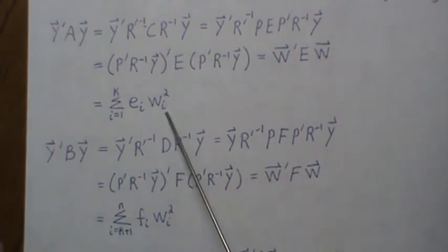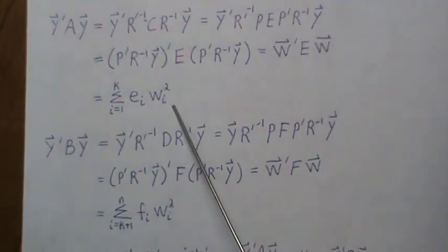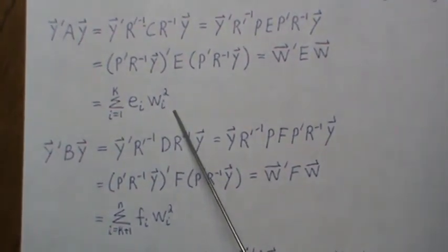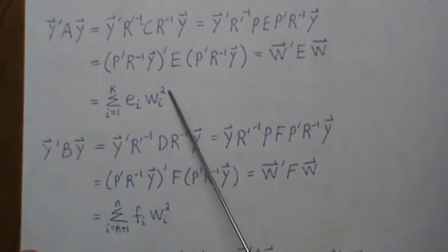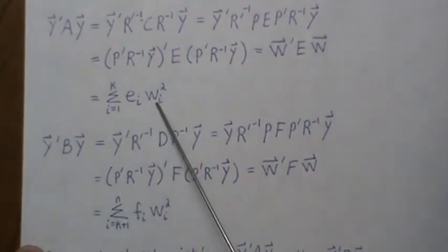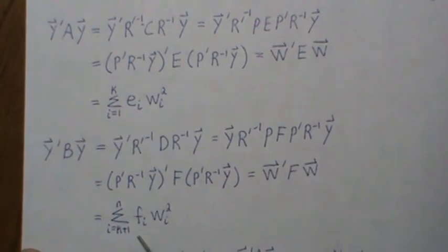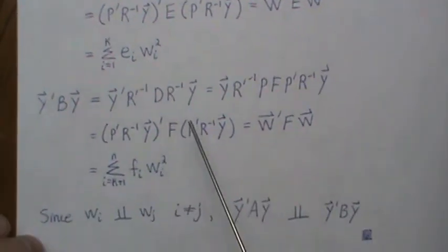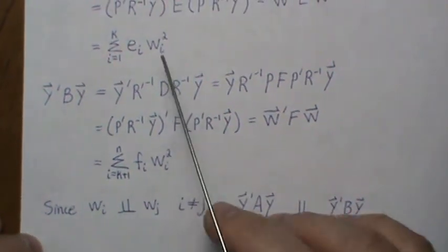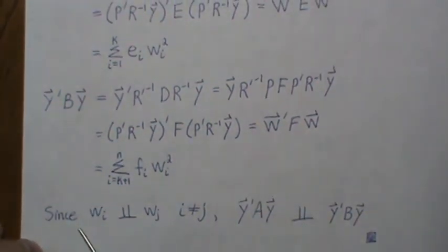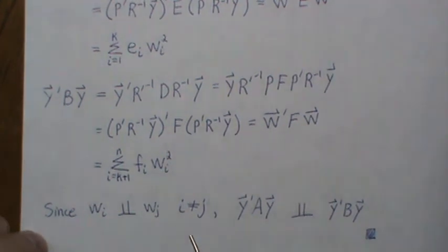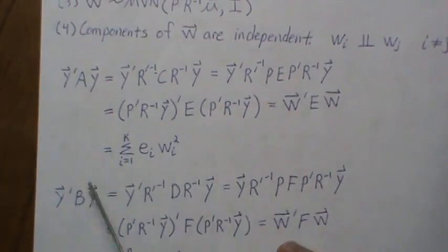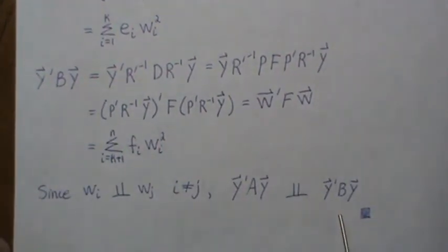Well, notice that the components of the vector W were independent. So this deals with the first K components and this deals with K plus one to N components. So that says that these two sums are independent. Since the components of W are independent, which implies that these quadratic forms are independent.